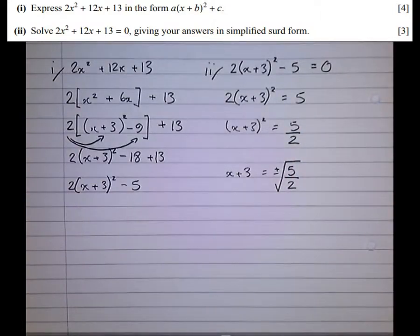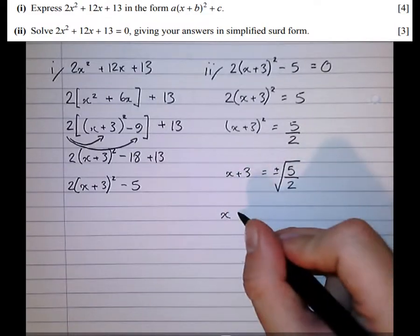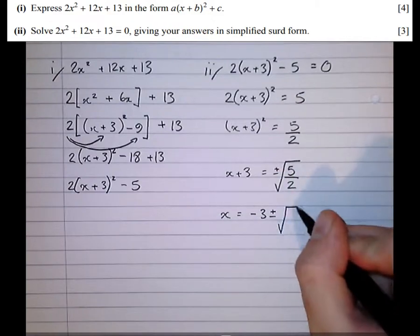We're almost there. The next step's quite easy. We just take the 3 across to the other side by taking it away to get x = -3 ± √(5/2).